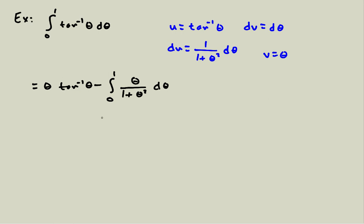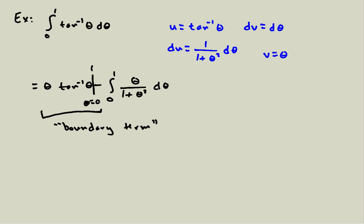Something interesting happened: I have theta times inverse tangent of theta, but the bounds are from 0 to 1, so I want just a number at the end. That's fine — this expression is called a boundary term, and in many cases it happens to be 0, but even if it's not we just evaluate it at the endpoints. So don't be scared of that; it means we evaluate this at some point. We're left with theta inverse tangent of theta evaluated at the endpoints, which is just a number, minus the remaining integral from 0 to 1.